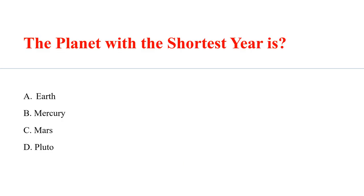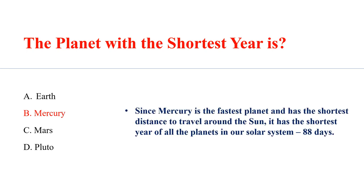The planet with the shortest year is Mercury. Since Mercury is the fastest planet and has the shortest distance to travel around the sun, it has the shortest year of all the planets in our solar system — 88 days.